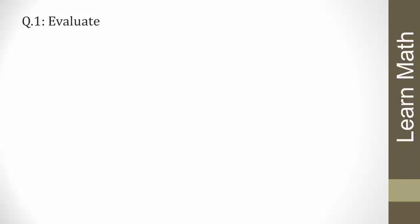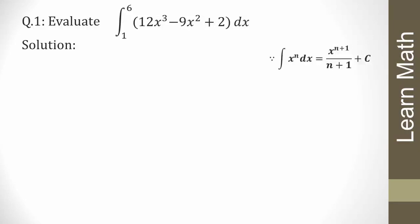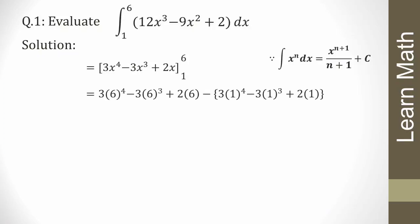Next question: evaluate the definite integral from 1 to 6 of (12x³ − 9x² + 2) dx. By using the power rule we can write [3x⁴ − 3x³ + 2x] from 1 to 6. Putting in the limits: (3·6⁴ − 3·6³ + 2·6) − (3·1⁴ − 3·1³ + 2·1). After simplifying we get 3252 − 2 = 3250.